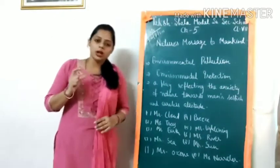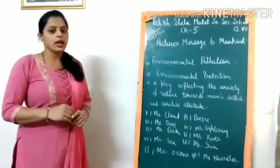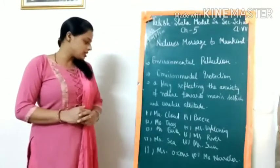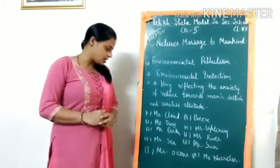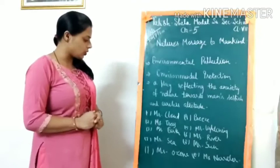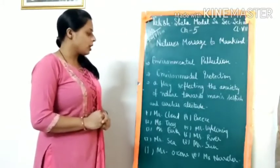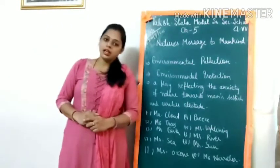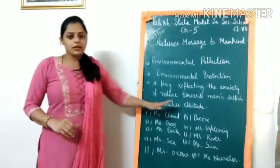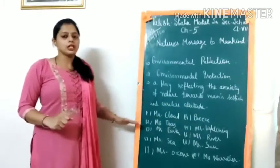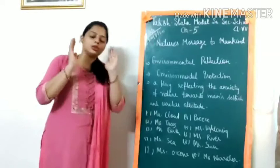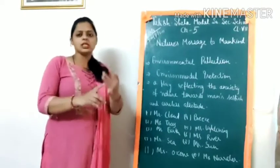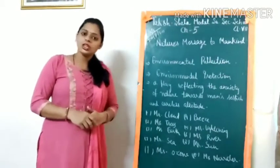This play is performed by many characters: Mr. Cloud, Miss Trees, Miss Earth, Mr. Sea, Miss Ozone, Miss Breeze, Miss Lightning, Miss River, Mr. Sun, and the narrator. These are all names of natural elements — things which are present in this universe.